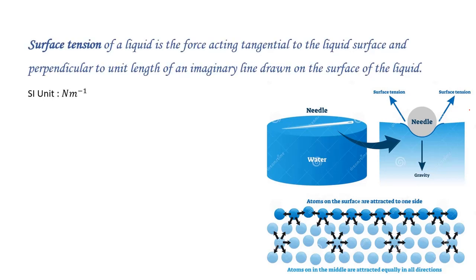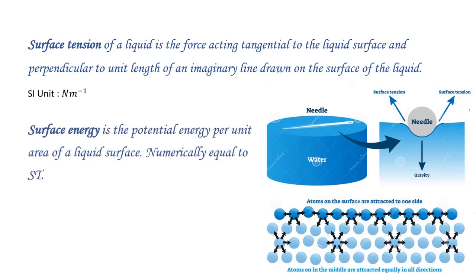Surface tension of a fluid is defined as the force acting tangential to the liquid surface and perpendicular to unit length of an imaginary line drawn on the surface of the liquid. Surface tension is due to the molecular interactions at the surface level and the bulk level. The surface molecules have a net potential energy due to the pulling of the molecules from the bulk, and this energy is known as the surface energy.